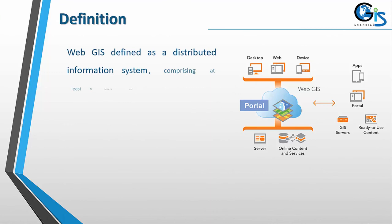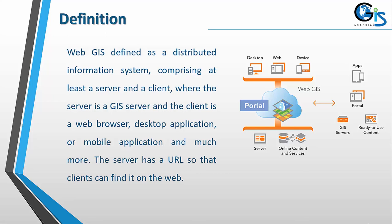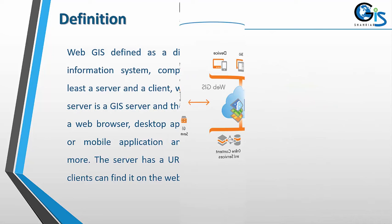Definition of Web GIS: Web GIS is defined as a distributed information system comprising at least a server and a client, where the server is a GIS server and the client is a web browser, desktop application, or mobile application. The server has a URL so that clients can find it on the web.